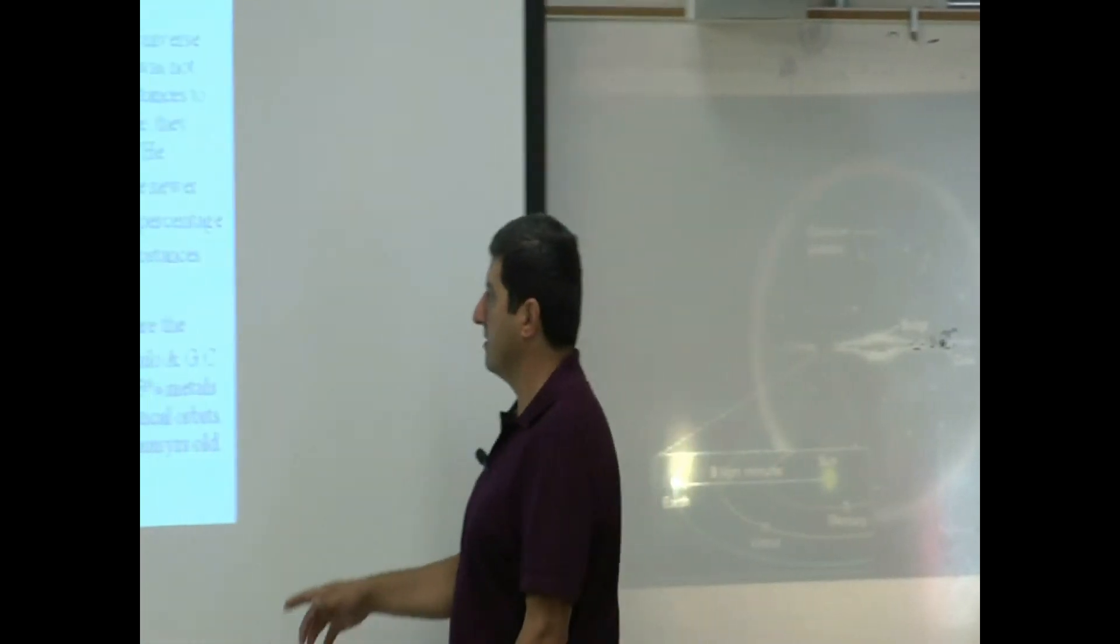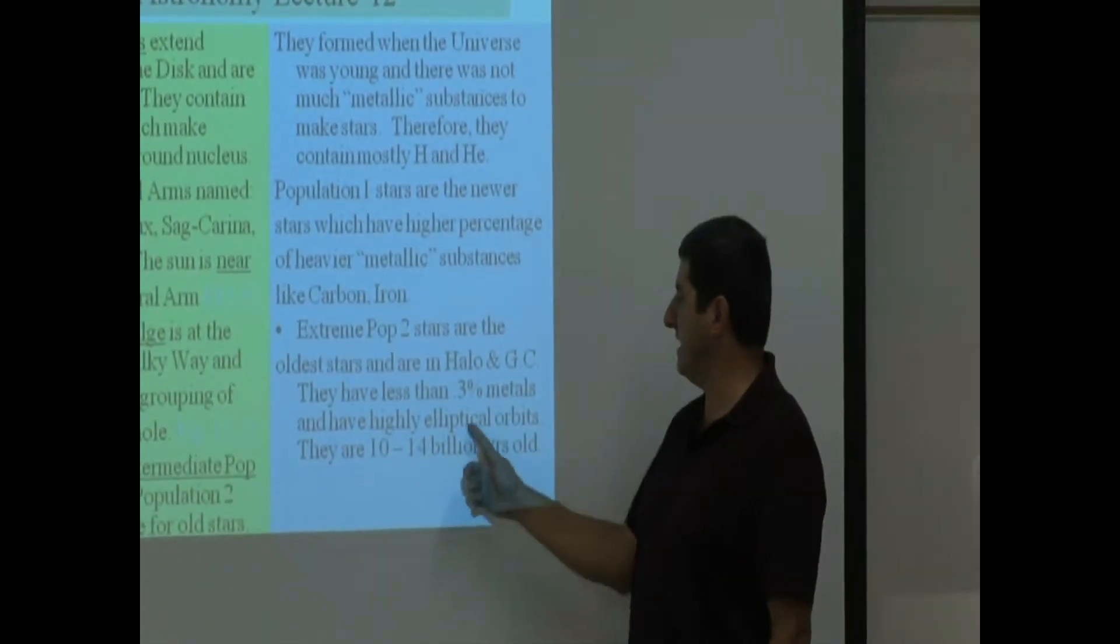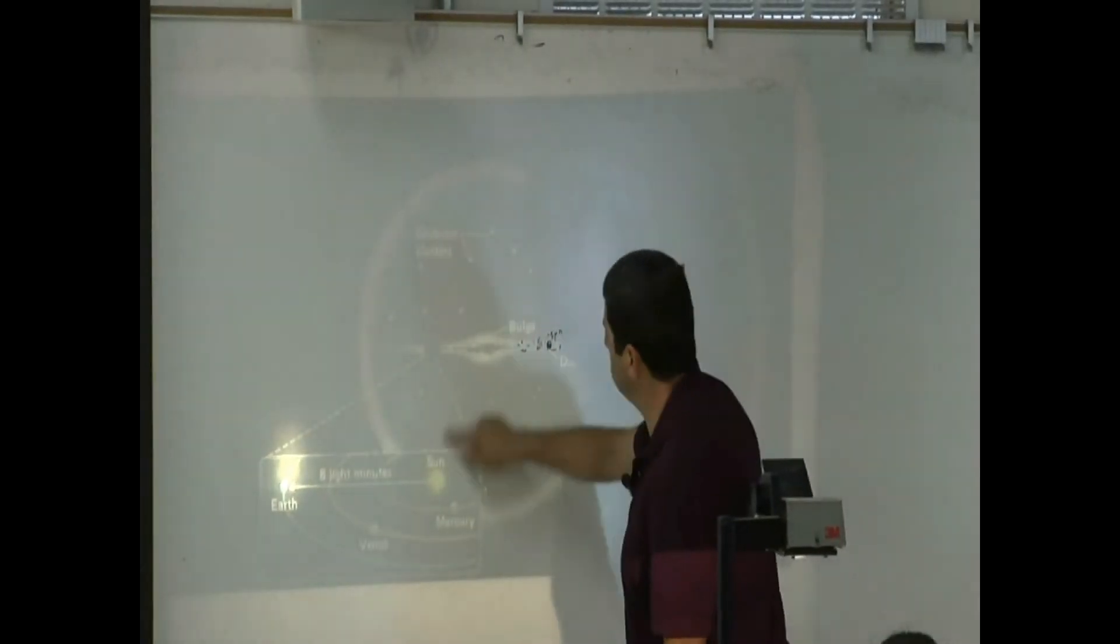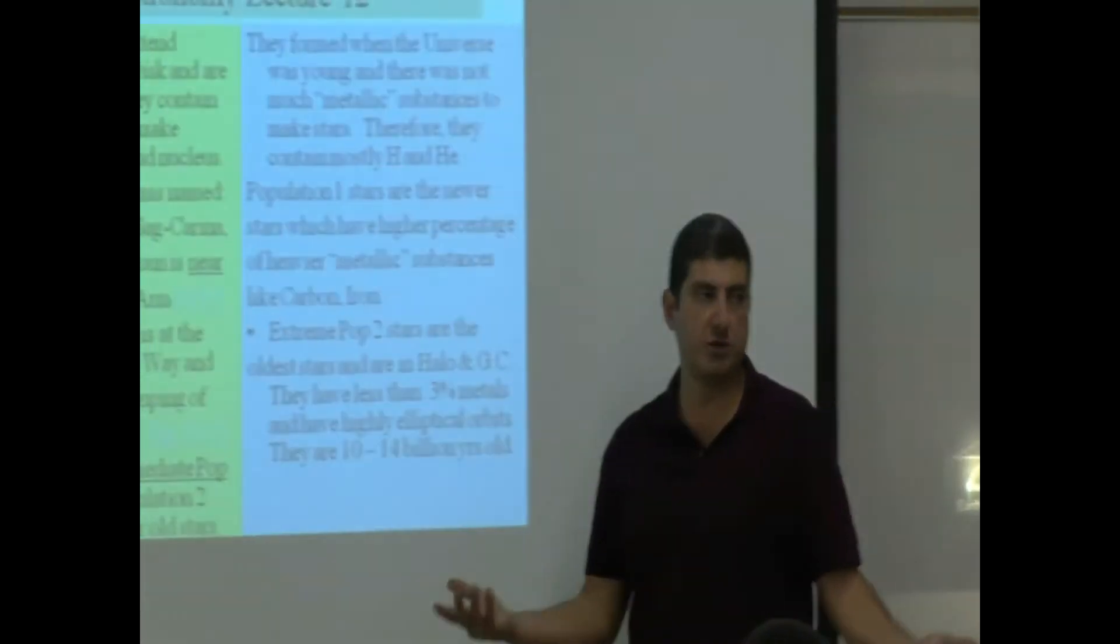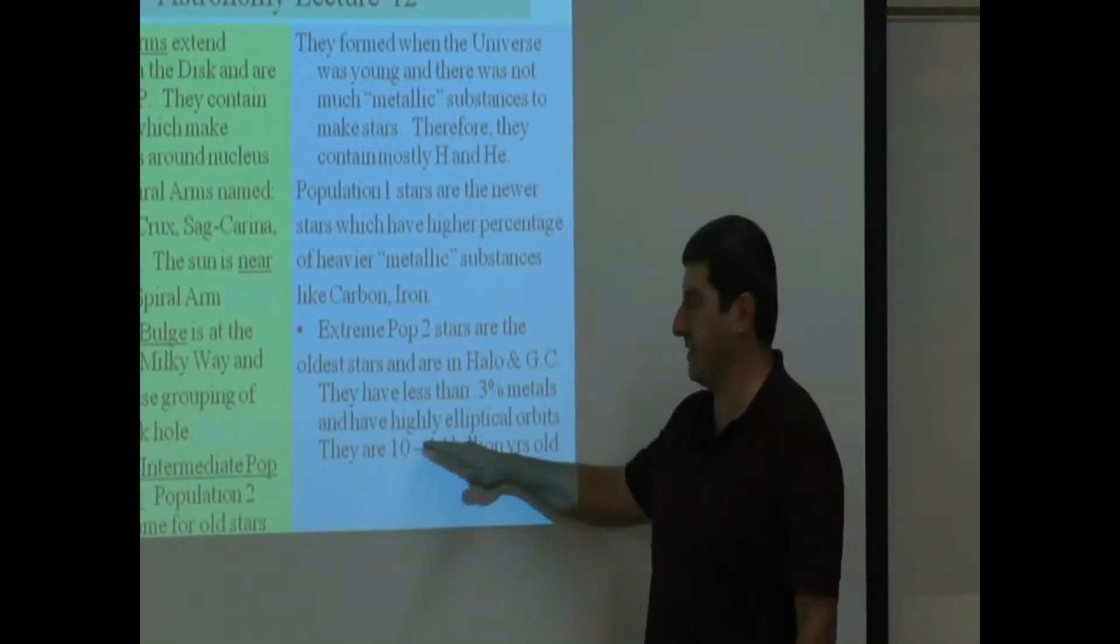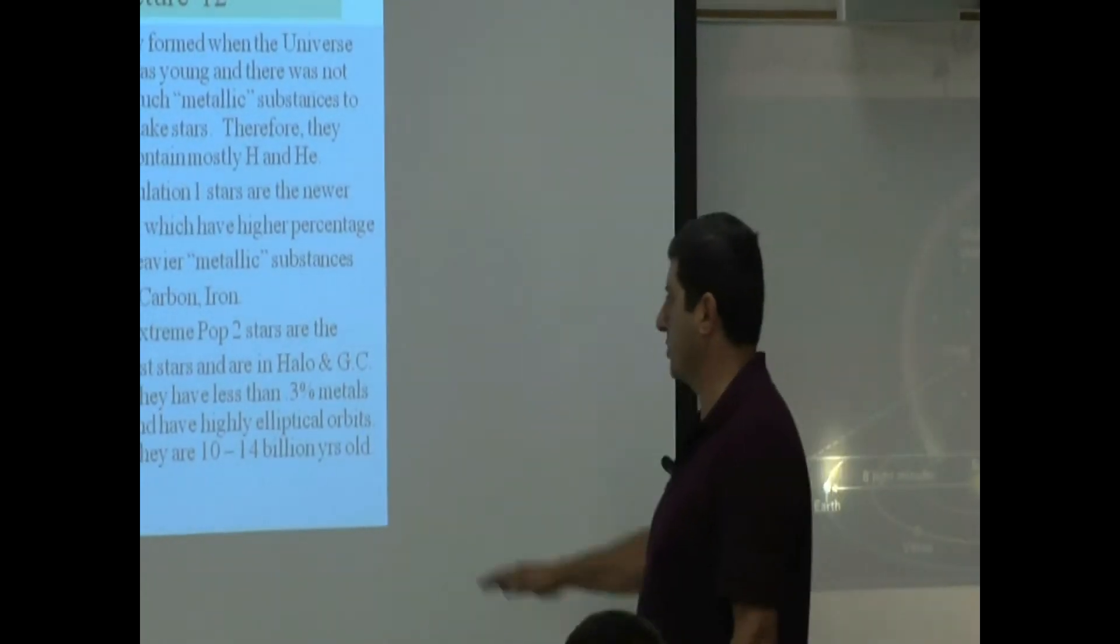They have less than 0.3% metals in it. They have highly elliptical orbits, so they go around the center with highly elliptical orbit, and they are 10 to 14 billion years old. They can't be older than 14 because the universe hasn't been longer than that. So that's about as old as you can get.